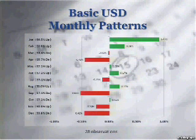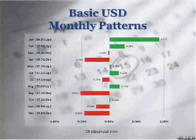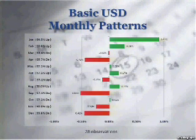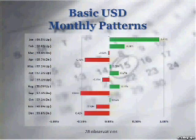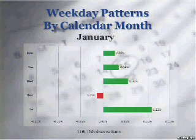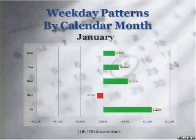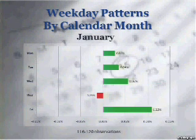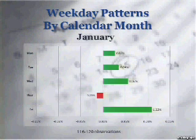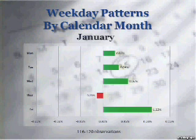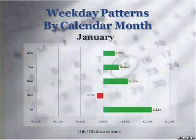You can see there's much more significant variance from zero in some of these monthly patterns — stronger certain times of year, not so strong other times. Then what I did was take a combination of the two studies. I looked at what the weekday patterns are on a month-by-month basis. So we look at January here and you see a lot of green, because as we just saw, the January pattern in the dollar is strong. Four out of five days of the week, the dollar tends to be strong.